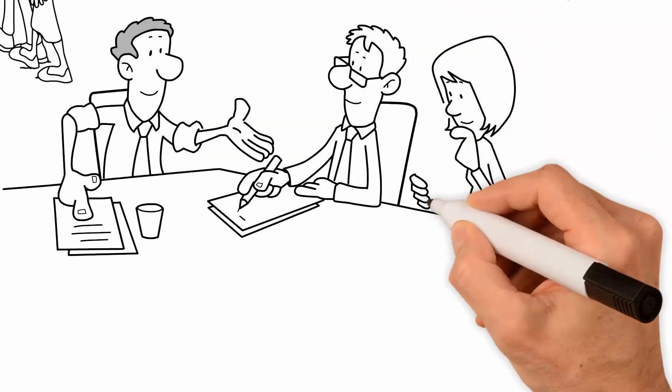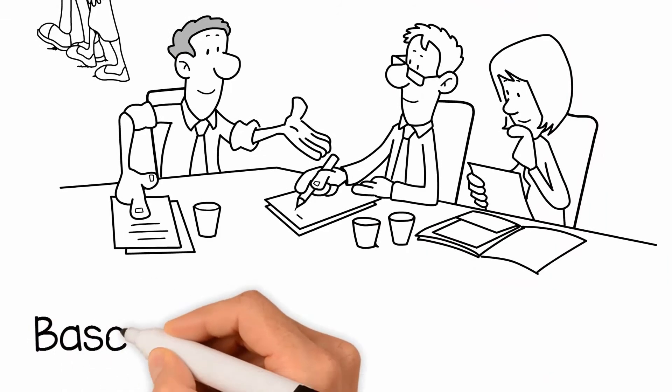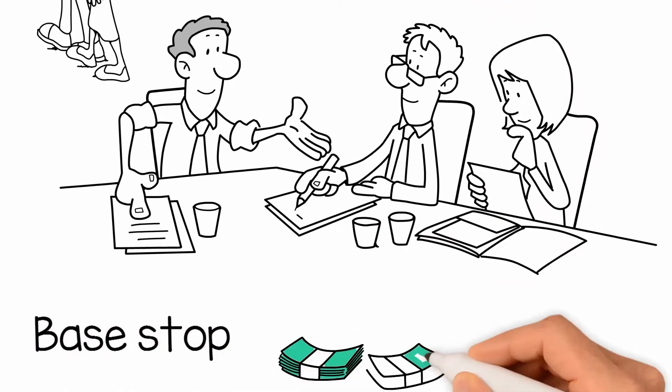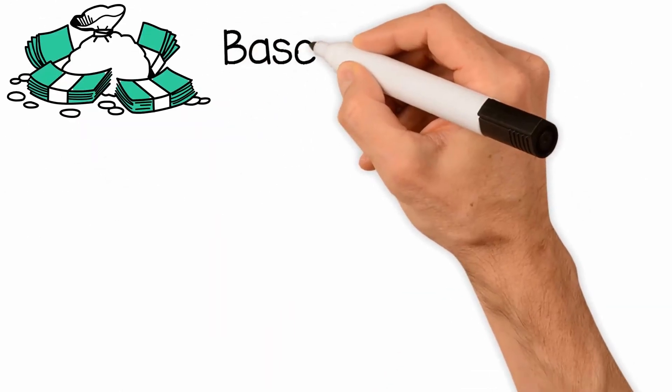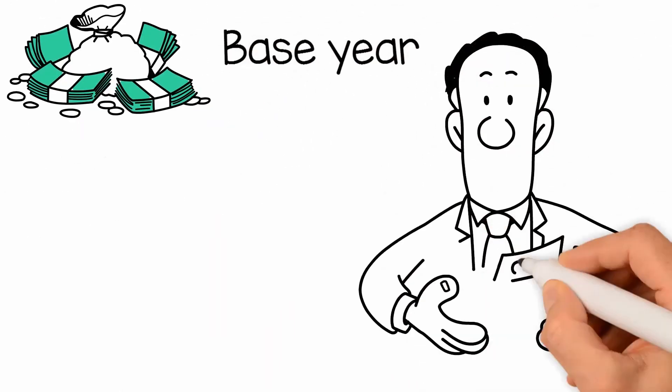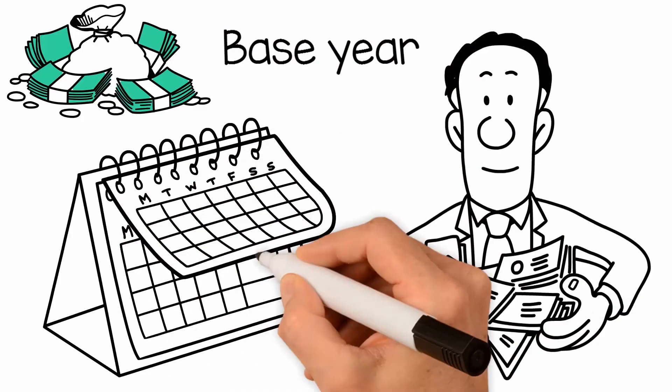With base stop, the tenant typically starts paying the excess amount within the first year of the lease. For base year, the tenant begins paying the increase over the base year starting during the next calendar year.